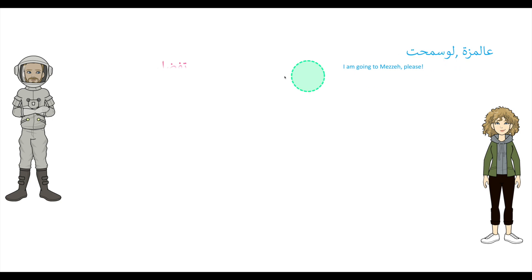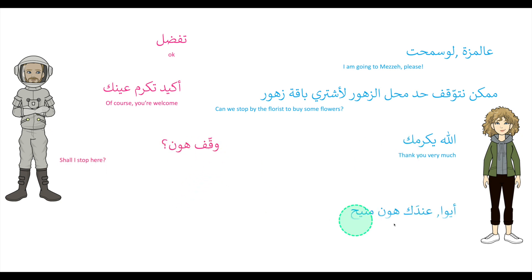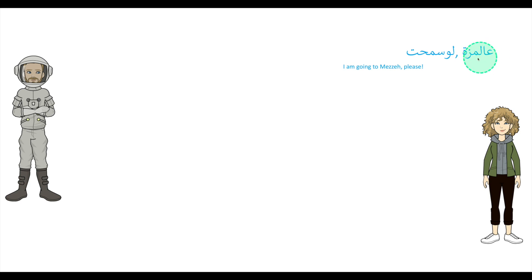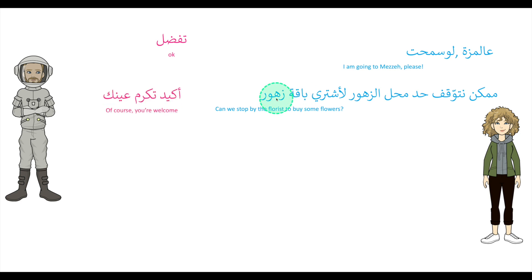Next topic — عالمزة لو سمحت — are you going to Mazzeh please? Similar to the previous approach. تفضل — coming in. She then asks: ممكن نتوقف حد محل الزهور لأشتري بقت زهور — can we stop next to the florist so I can buy a bunch of flowers? بقة is a bunch and زهور is flowers. He says أكيد تكرم عيونك — of course, you're very welcome.